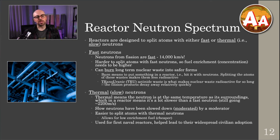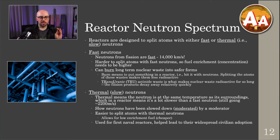With fast neutrons you need higher enrichments, higher concentrations, which costs more money. Low enrichment fuel is cheaper, and you can also use no enriched fuel with some reactor designs — like the graphite pile in Oppenheimer, which had no enrichment and was a thermal, or slow, reactor. A tidbit: the first naval reactors used thermal neutrons, and that helped lead to the widespread adoption of certain power plant designs.